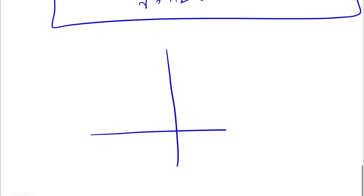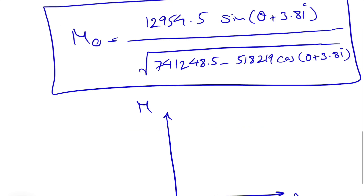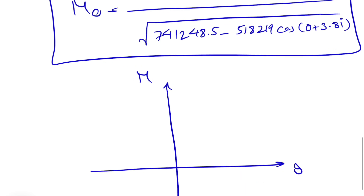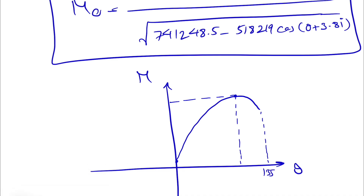Using this equation — plotted with ChatGPT — the moment starts near zero at θ = 0 (since sin(3.81°) is just slightly above zero), rises to a maximum, then returns toward zero at θ = 135 degrees. We now need to find the maximum moment M_max and the corresponding angle theta.